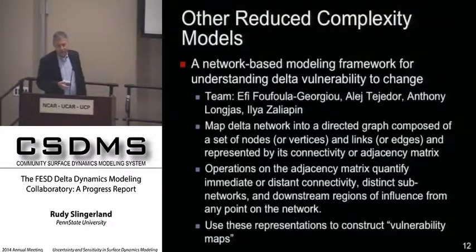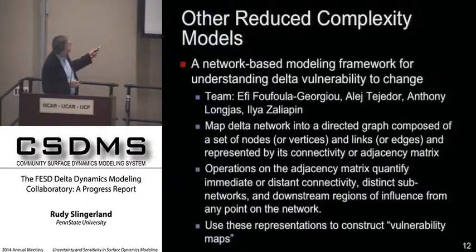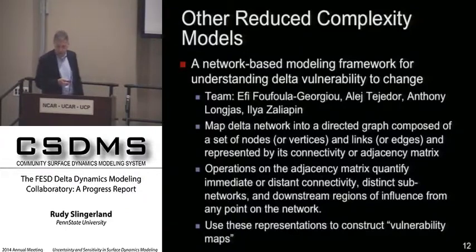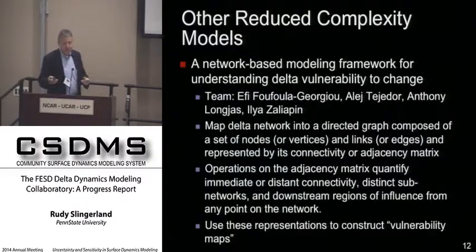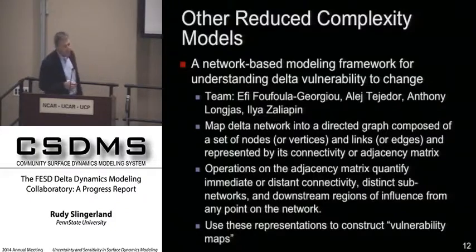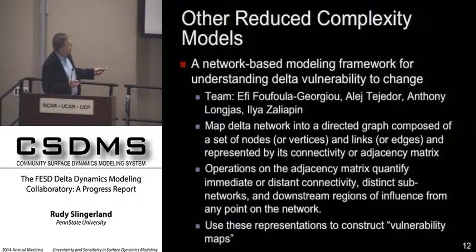The second model takes a very different approach: it's by Efi Foufoula-Georgiou and her students at Minnesota. It's a network-based framework for understanding delta vulnerability. The basic idea is that the delta network — a series of distributary nodes, bifurcations, and channels — is abstracted into an adjacency matrix. You can then perform operations on that matrix to answer questions about downstream connectivity, subnetworks within the system, and downstream regions influenced by upstream parts of the network.